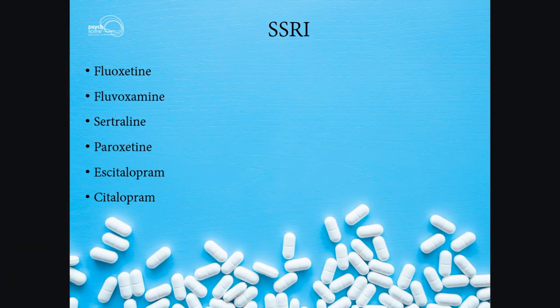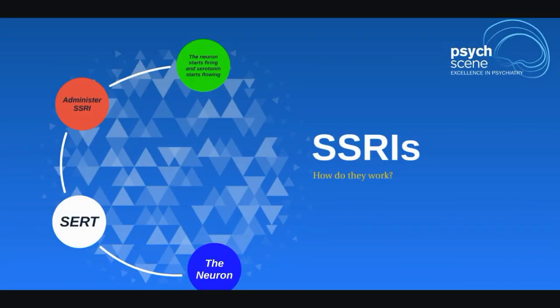Hi, welcome to Hubbytes. I'm Sunil Rege, consultant psychiatrist. Today I'll be taking you through the psychopharmacology of SSRIs, or selective serotonin reuptake inhibitors. These are medications used in depression and anxiety. Names such as fluoxetine, sertraline, fluvoxamine, paroxetine, escitalopram, and citalopram come under the banner of SSRIs. So let's go through the mechanism step by step.